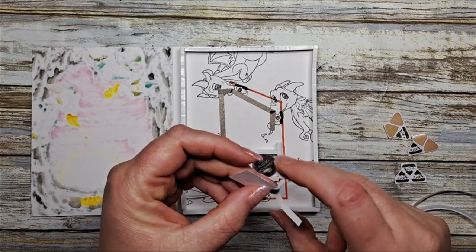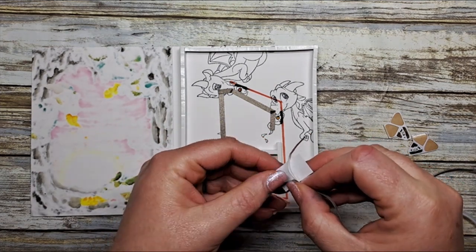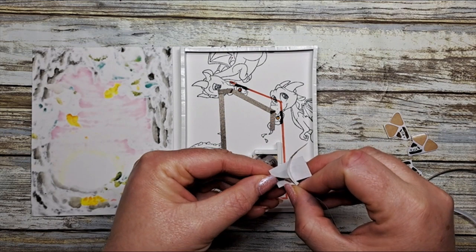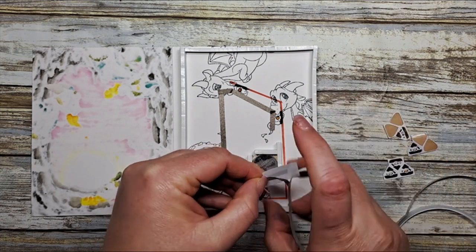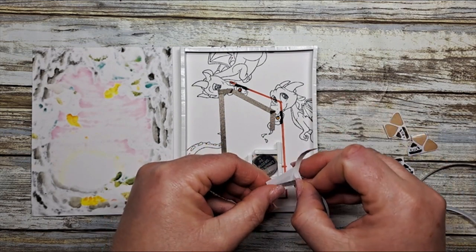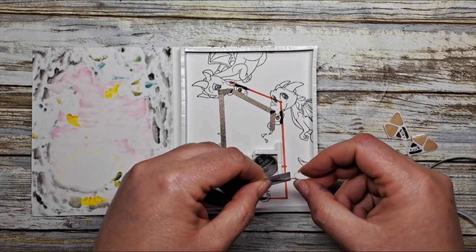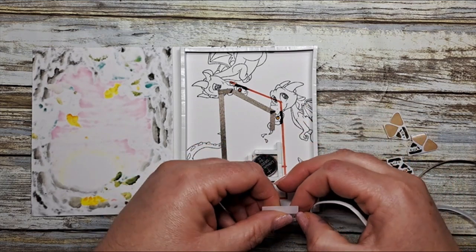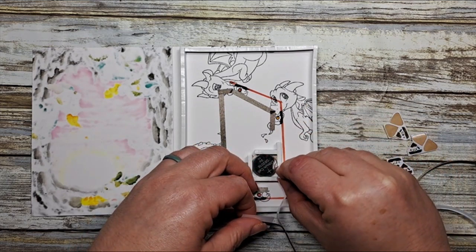You're going to wrap it around to the other side like so. Then I'm going to peel off the backer part of my little housing here.